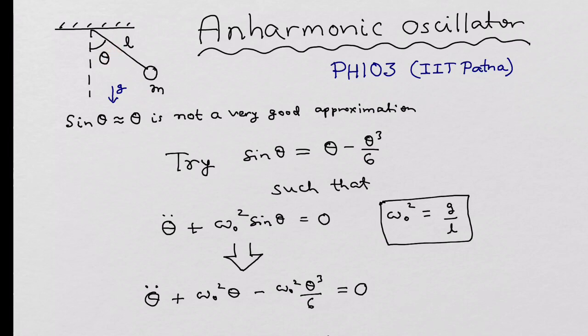Such that sin θ equals θ is not a very good approximation anymore. In such a situation, let us consider the next higher order term in the expansion of sin θ, which is minus θ³/6, such that the differential equation from the system θ̈ + ω₀² sin θ = 0